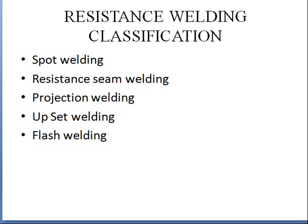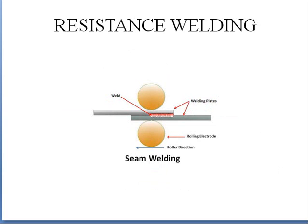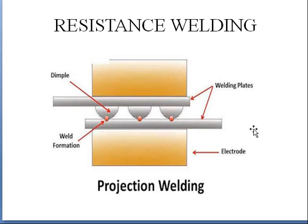Resistance welding is of different types: spot welding, resistance seam welding, projection welding, upset welding, and flash welding. In spot welding, you have two electrodes and two plates; when both electrodes come closer, resistance develops at the junction, heat is generated, and the two metals get joined. In seam welding, you have two rollers running over the plate, and welding takes place continuously. In projection welding, there are dimples on one part of the plate; the electrode moves over the plates, and when sufficient heat is reached, these dimples become flattened and a joint takes place between both the welds.